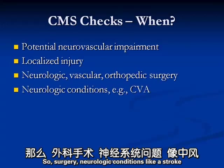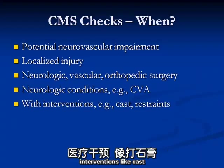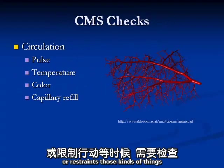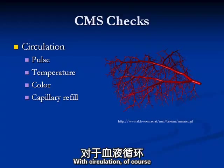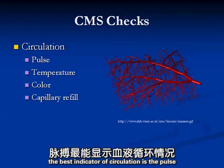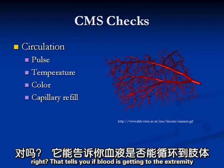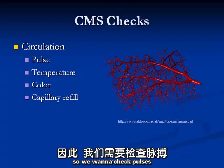So: surgery, neurologic conditions like a stroke, interventions like casts or restraints. Here are the things we check with CMS checks. With circulation, the best indicator is the pulse - that tells you if blood is getting to that extremity. So we check pulses. If we're worried about CMS because of my elbow, we would check the pulse in my right arm. And to see if that pulse is normal or not - we compare it to the left arm to see if it's normal.